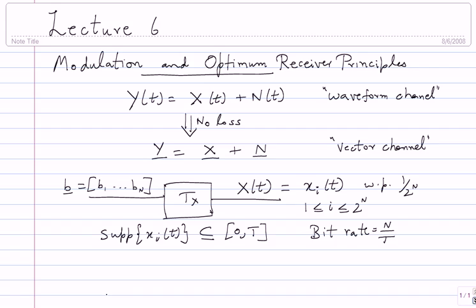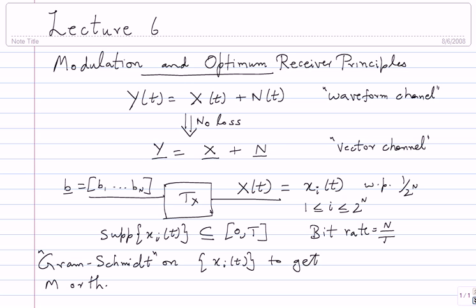How do I go from a set of signals x_i(t) to a basis? The standard procedure is the Gram-Schmidt orthonormalization process. Given a set of vectors that may not be orthonormal, Gram-Schmidt finds a set of basis vectors that spans them. Applying Gram-Schmidt to the x_i(t) using the L2 inner product, I get m orthonormal basis vectors, where m may be less than or equal to 2^n.